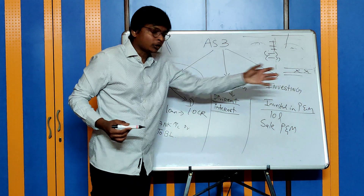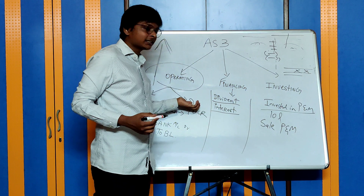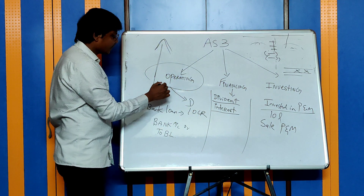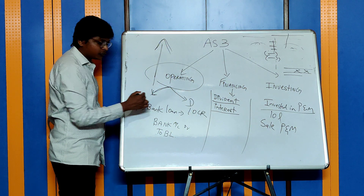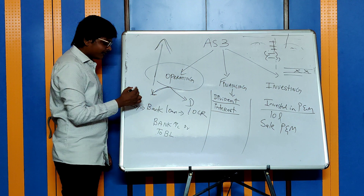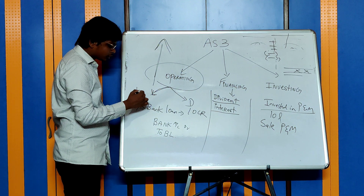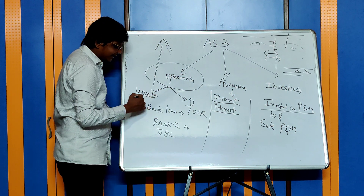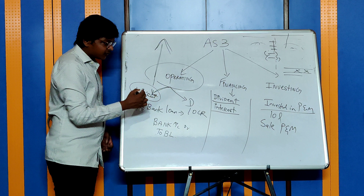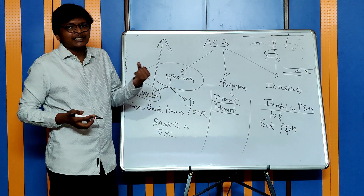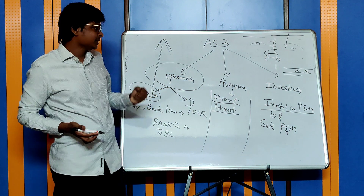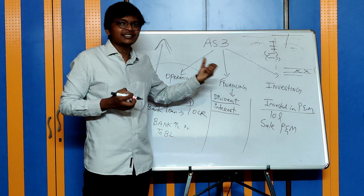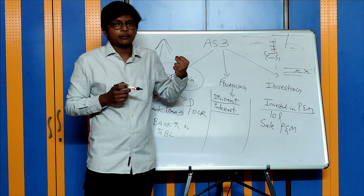Financing and investing activities are also prepared using the direct method. However, for operating cash flows, there is another method called the indirect method — which identifies how much cash is generated in the business starting from net profit.